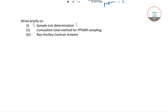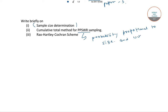Now we will start with the cumulative total method for PPSWR sampling, where PPSWR stands for probability proportional to size with replacement sampling. We have to write briefly on the cumulative total method for probability proportional to size with replacement sampling.